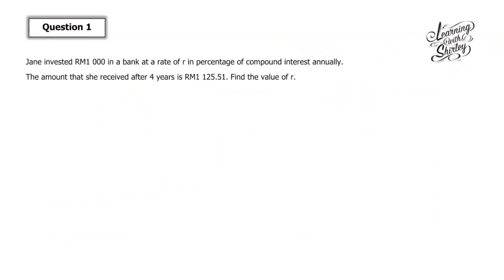Let's look at question number 1. Jane invested RM1,000 in the bank at a rate of R% of compound interest annually. The amount she received after 4 years is RM1,125.51. Find the value of R. So here, our P is 1000, R is unknown, annually means N equals 1, and after 4 years means T is 4. This is the matured value. Find the value of R.